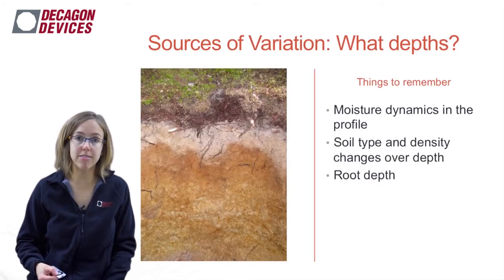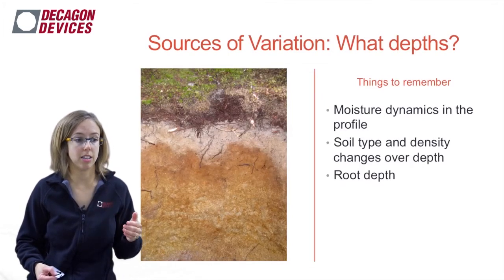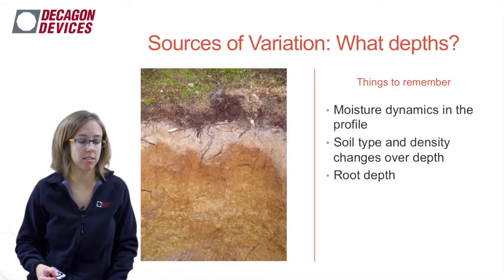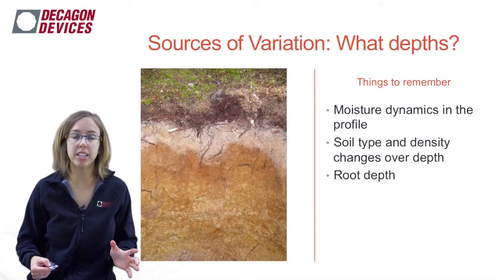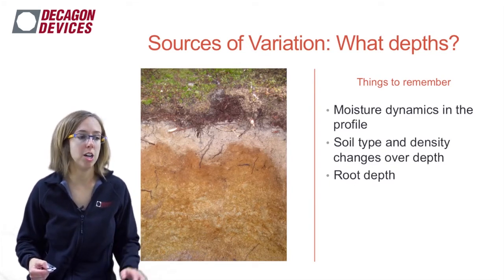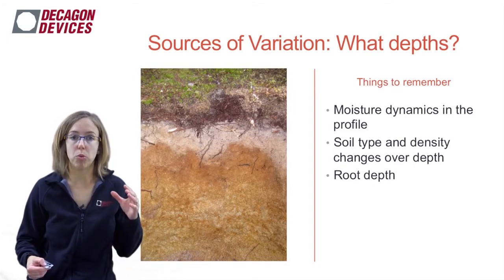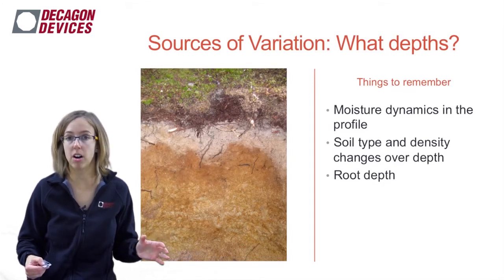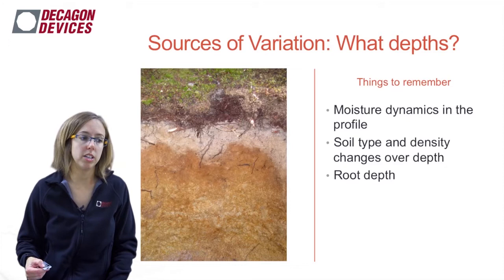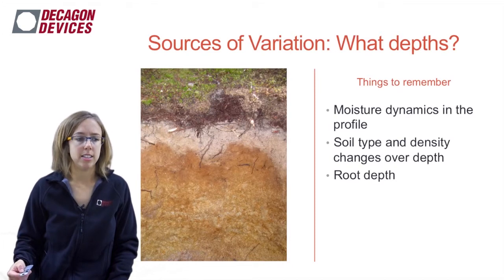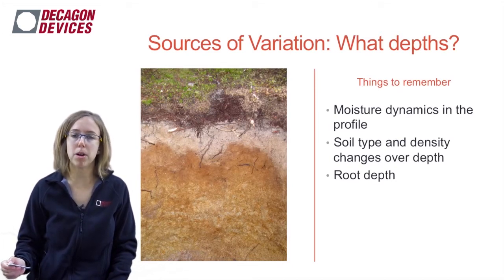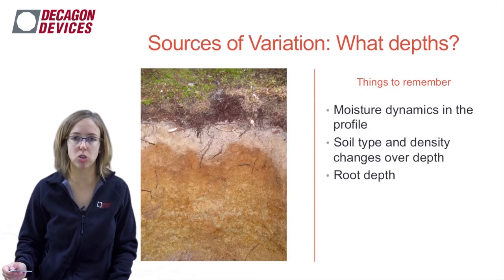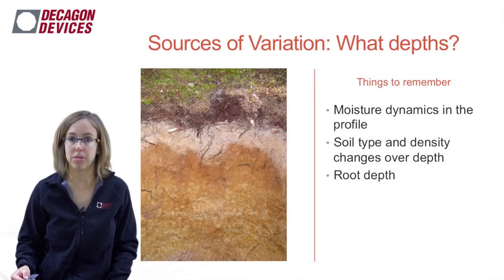One thing you definitely need to remember is soil moisture variability with depth. There are going to be really interesting moisture dynamics in a soil profile, but generally soil type and density will change with depth, and root depth will have a major influence on your soil moisture profile. If a sensor reading at a deeper location doesn't seem right, don't necessarily assume the sensor is broken — that might be telling you something really interesting about your soil moisture profile.